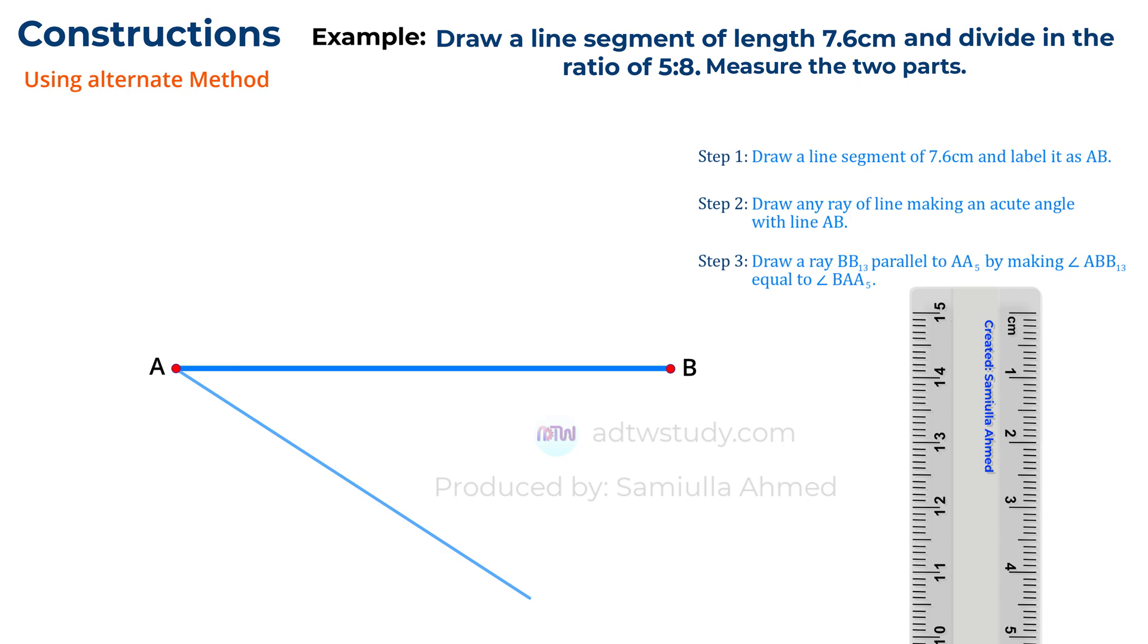Next, we need to draw another line making the same angle from point B. To do this, take a compass, adjust it to some length, and place it at point A to draw an arc. Then without changing the compass's length, place it at point B and cut an arc there as well. Next, adjust the compass between the two points where the arcs were drawn, and using that distance as the radius, draw another arc from this point.